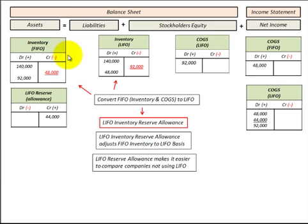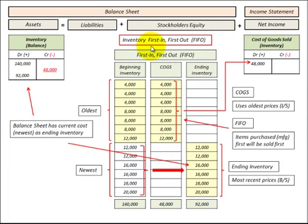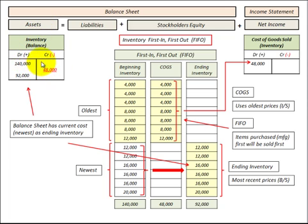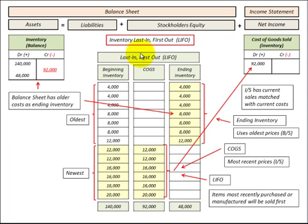Before we do that, we're going to go through an example and show how our FIFO and LIFO inventory are calculated. FIFO, or first in first out, is where we use our oldest inventory first. Items purchased or manufactured first will be sold first, so our cost of goods sold uses our oldest prices — that's what's reflected on our income statement. What remains is our ending inventory, reflecting our newest or most recent prices, which is what we include in the inventory account on our balance sheet.